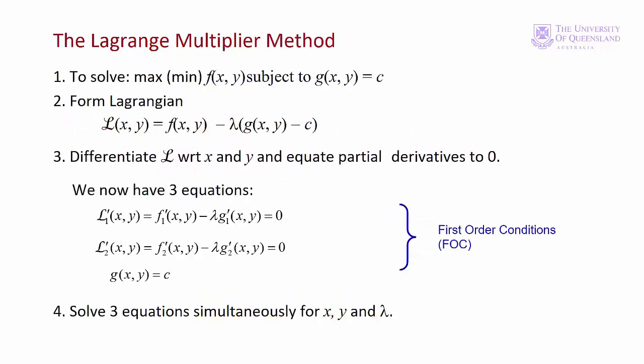This slide sets out the Lagrange multiplier method for finding the optimal values of x and y. There are four steps — follow these and you'll always be on the right track. The first step is to define the problem mathematically. Next we form the Lagrangian. Step three is finding the first order conditions: differentiate with respect to x and y and set the first partials equal to zero. Including the constraint gives us three equations and three unknowns: x, y, and lambda. In step four we solve for these three, which is usually the trickiest part.